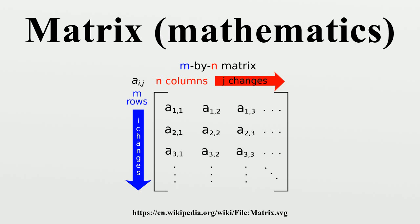Some programming languages utilize doubly subscripted arrays to represent an M times N matrix. Some programming languages start the numbering of array indexes at 0, in which case the entries of an M by N matrix are indexed by 0 ≤ i ≤ M minus 1 and 0 ≤ j ≤ N minus 1. This article follows the more common convention in mathematical writing where enumeration starts from 1. The set of all M by N matrices is denoted accordingly.